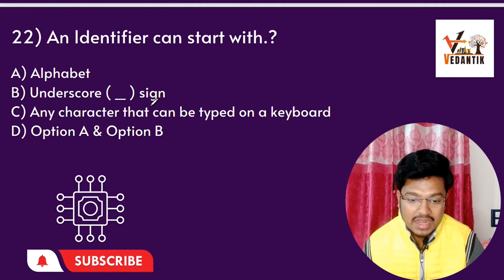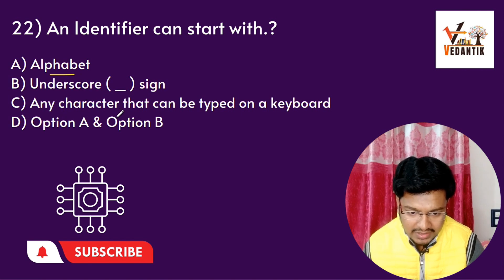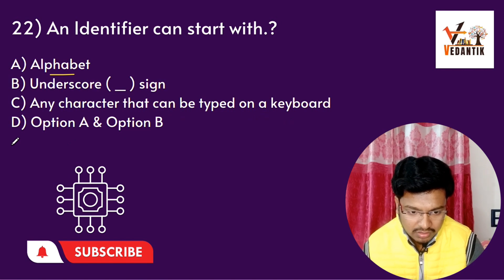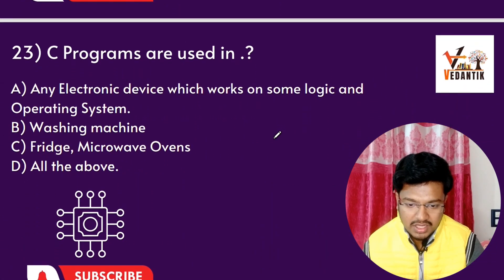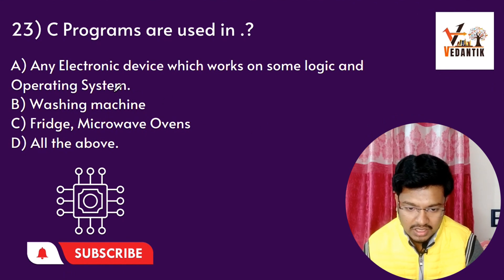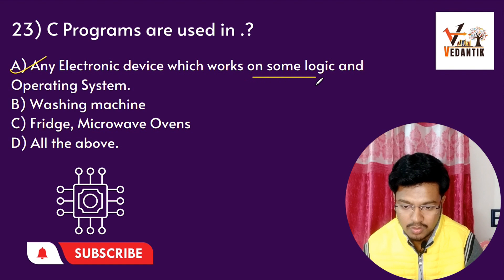Question 17: An identifier can start with — alphabet, underscore, or any character. The answer is alphabet or underscore, option A and B — option D. Question 18: C programs are used in any electronic device which works on logic and an operating system — washing machine, fridge, microwave.